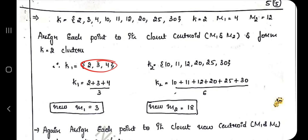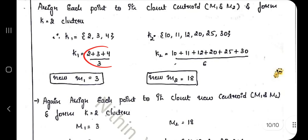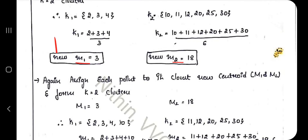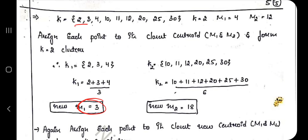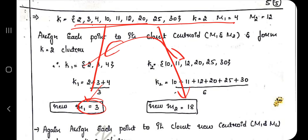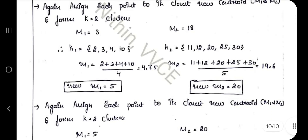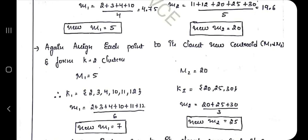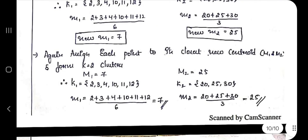After grouping, say elements {2, 3, 4} are close to M1=4 and other elements are close to M2=12. Calculate the mean of each group to get new M1 and new M2 values. Then repeat: reassign every element to whichever new mean it's closest to. Items may switch clusters during this step — that's expected.